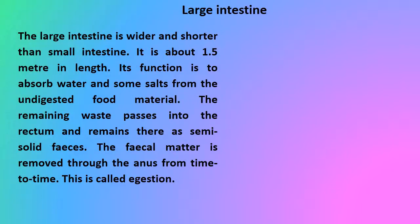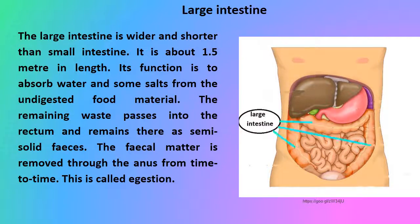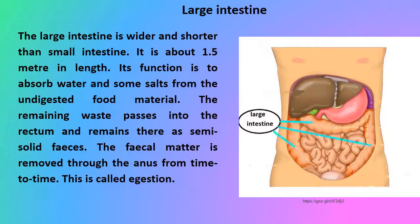Then food reaches the large intestine. The large intestine is wider and shorter than the small intestine — it is about 1.5 meters in length. Its function is to absorb water and some salts from the undigested food material. The remaining waste passes into the rectum and remains there as semi-solid feces. The fecal matter is removed through the anus from time to time. This is called egestion.